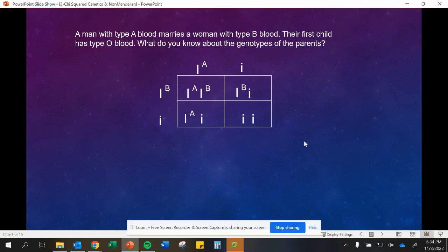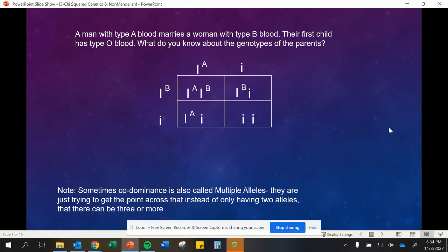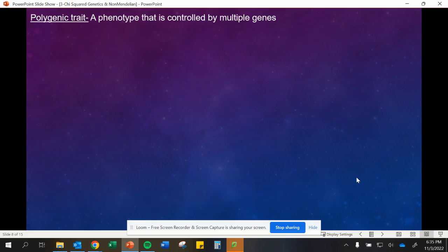Sometimes codominance is also looking at multiple alleles because we have an A allele, a B allele, or the recessive no allele at all. Instead of having two alleles, there can actually be three or even more in some cases. And that's where we're getting at our polygenic traits.